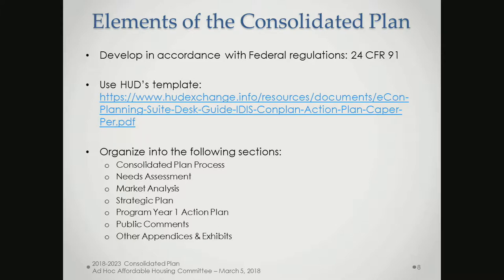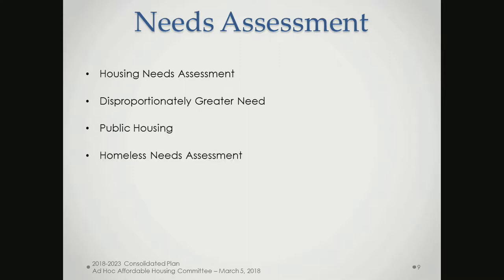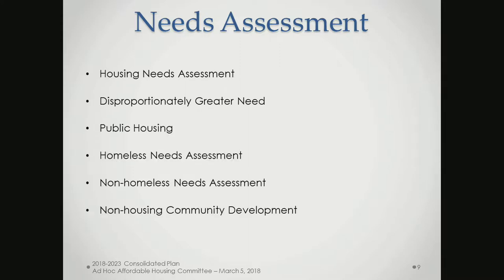We'll also have appendices containing public comments gathered throughout the process, as well as maps and exhibits. The needs assessment covers a general housing needs assessment, disproportionately greater need — which HUD defines as overcrowding, substandard kitchen or bathroom facilities, or cost burden — a homeless needs assessment, a non-homeless needs assessment addressing persons with HIV, and non-housing community development items like parks, sidewalks, public amenities, and community facilities.